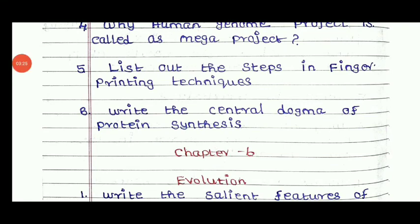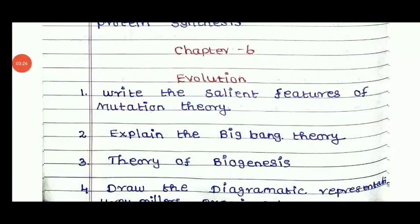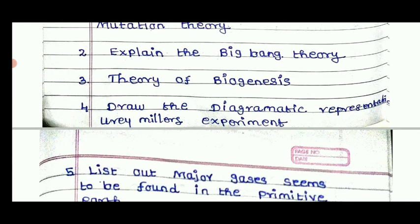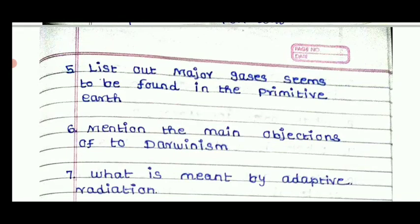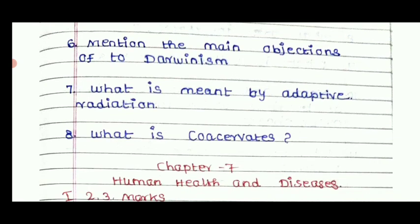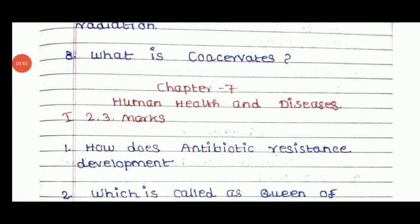For Chapter 6, Evolution, important questions include: write the salient features of mutation theory; explain the Big Bang theory and the theory of biogenesis; draw the diagrammatic representation of the Urey-Miller experiment; list the major gases of the primitive earth's atmosphere; mention the main objections to Darwinism; and what is meant by adaptive radiation.